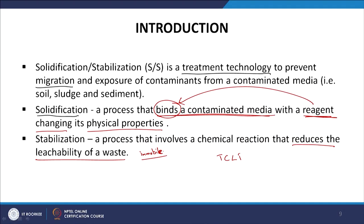The TCLP test tries to mimic the worst-case scenario for a particular waste. The worst case is that your waste ends up in a municipal dump, where during anaerobic decomposition acids are formed. Those acids come into contact with your hazardous waste — typically containing heavy metals — causing the contaminants to change phase from the solid phase to the aqueous phase because of the low pH. This leachate can then contaminate groundwater and be transported over a wider area.